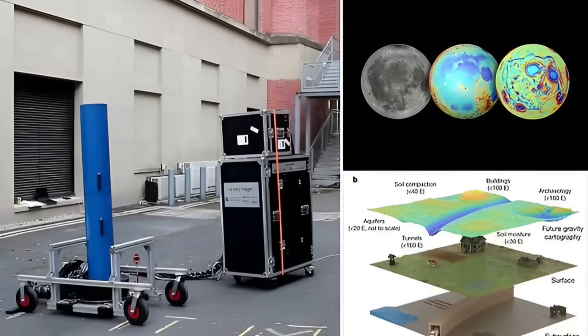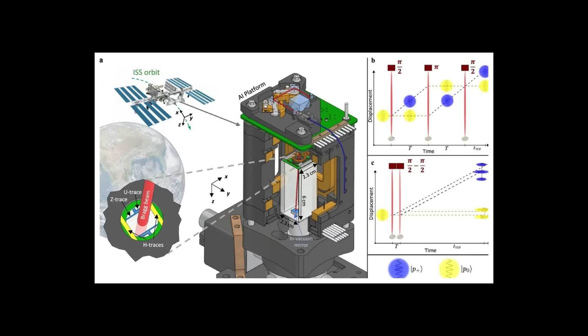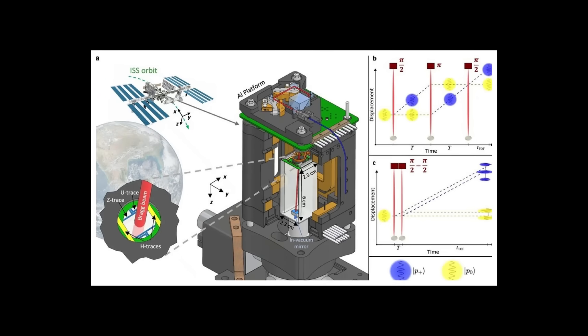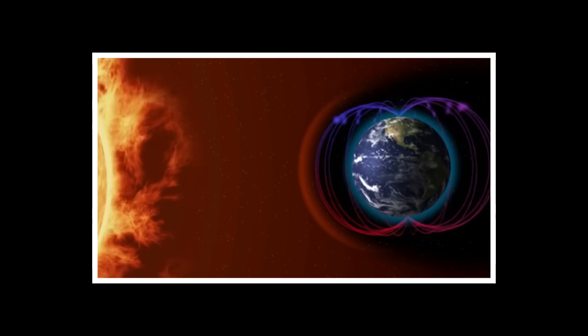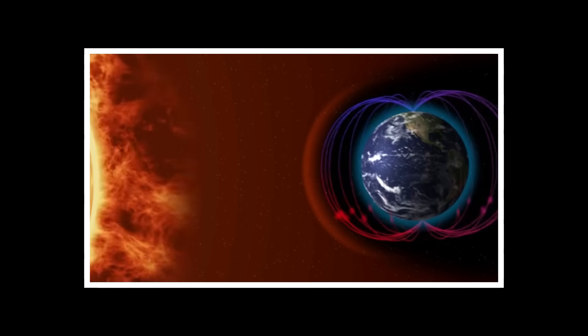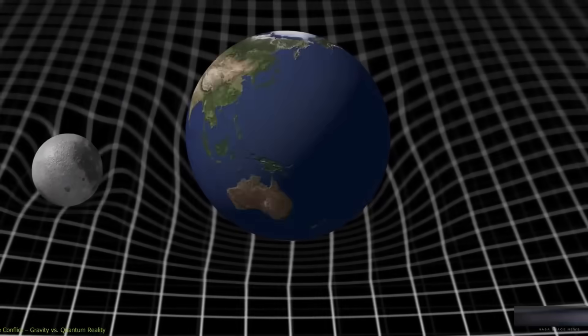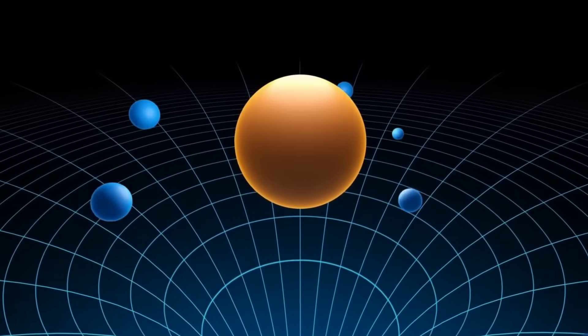What did the sensor see? Let me show you what this quantum gravity sensor actually recorded. Picture a standard gravity reading. A smooth, consistent wave pattern, tracking Earth's gravitational pull. Everything is normal. Then, suddenly, the signal plummets.